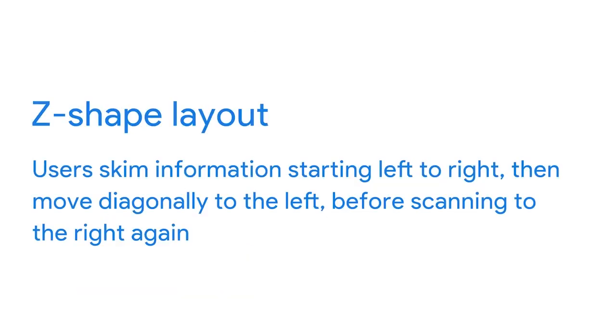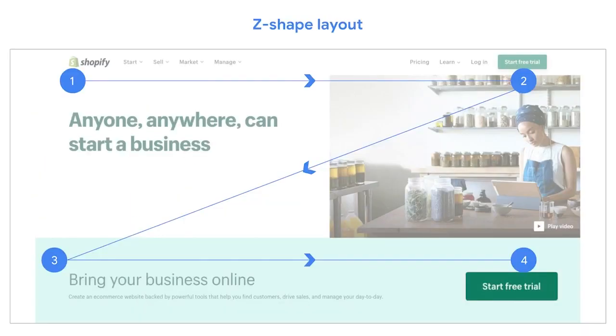The Z shape is where users skim information starting left to right, then move diagonally to the left before scanning right again — like the letter Z. It imitates the natural scanning pattern of Western users who read left to right and top to bottom. Z shape layouts are typically used for sites with less content. Keep in mind, anyone with a visual impairment would need accessibility support but would follow the same Z or F shape pattern.